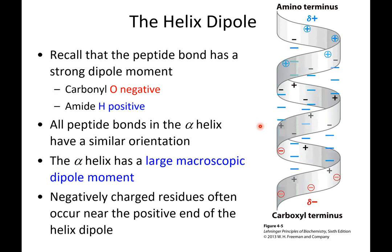The helix does have a dipole moment. All of our nitrogens tend to face in one direction and all of our carboxylic acids tend to face in another direction, giving an overall net effect of a more positive characteristic on one end and a more negative characteristic on the other end.